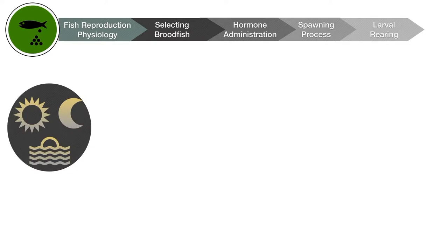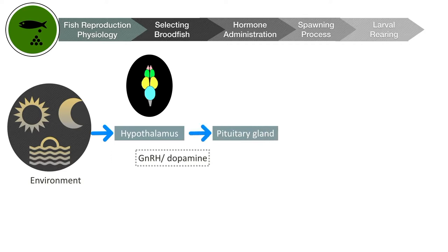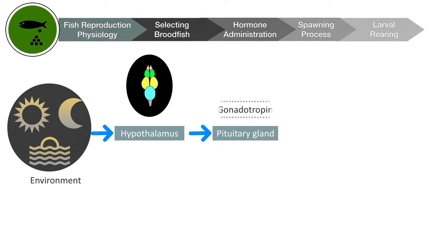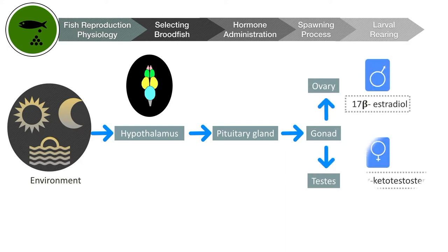So, first of all, spawning will be triggered by environmental stimuli. When conditions are appropriate, the brain is triggered. The hypothalamus, located at the base of the brain, will release either GnRH or dopamine depending on the environmental cues. If GnRH is released, it travels to the pituitary gland and stimulates the release of gonadotropin hormone into the bloodstream. When the gonadotropin hormone reaches the gonad, it releases gonadal steroids — either 17-beta estradiol from the ovary or 11-alpha ketotestosterone from the testis — inducing final maturation of the gametes.